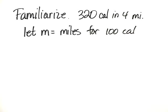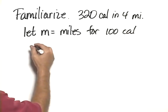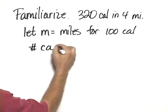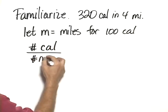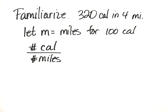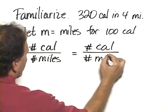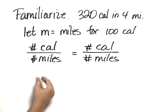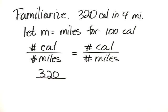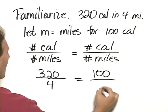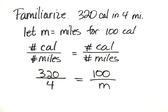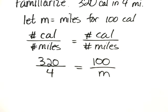This is a classic situation in which we can use a proportion to solve this. So we want to translate, which is the second step of the process, that the number of calories divided by the number of miles must be the same for each situation. So what we know is that we burn 320 calories walking 4 miles, and we want to know how many miles m it takes to burn 100 calories. So it's calories over miles, calories over miles.